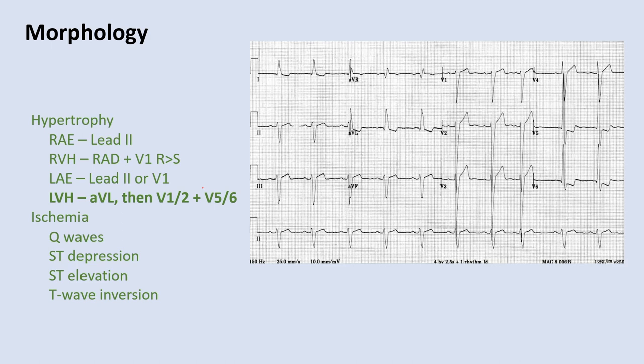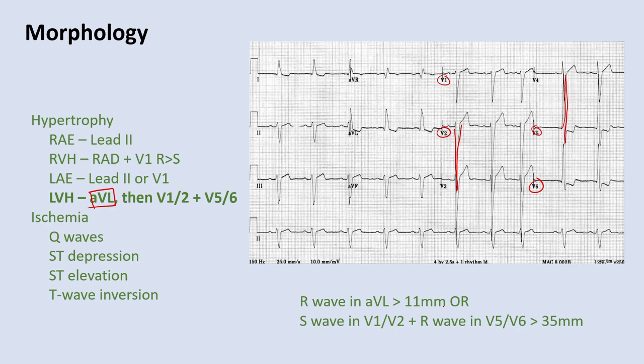Left ventricular hypertrophy is one of the most common things you'll assess. There are multiple criteria. The easiest is lead AVL — if the R wave is more than 11 small boxes, that meets LVH criteria. Another common method — the Sokolov-Lyon criteria — is to find the most negative S wave in lead V1 or V2, then find the most positive R wave in V5 or V6, and add them together. If they add up to over 35 millimeters, that's diagnostic for left ventricular hypertrophy.